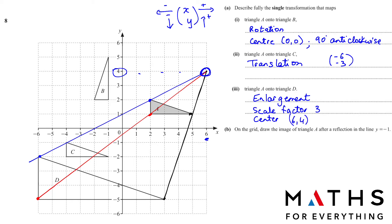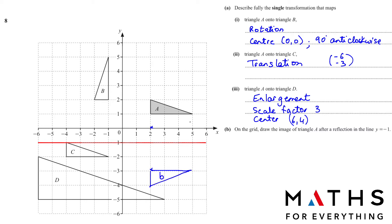On the grid, draw the image of triangle A after the reflection in the line y = -1. Y = -1 is here, so we draw a mirror line and we reflect the triangle from the mirror line. Just count the points that the vertices are away. So 1, 2, and then there are 3 squares here, 1 down. This is our answer. Reflection is usually very easy to draw.